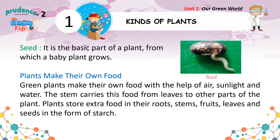Plants make their own food. Green plants make their own food with the help of air, sunlight and water. The stem carries this food from leaves to other parts of the plant. Plants store extra food in their roots, stems, fruits, leaves and seeds in the form of starch.